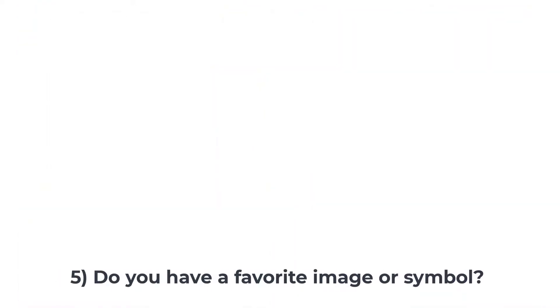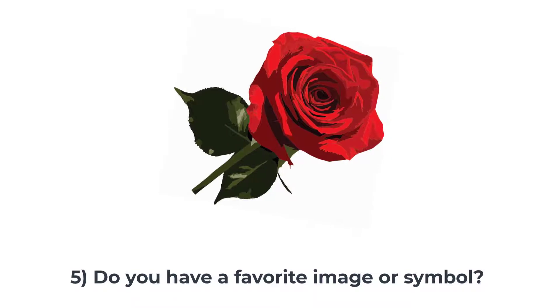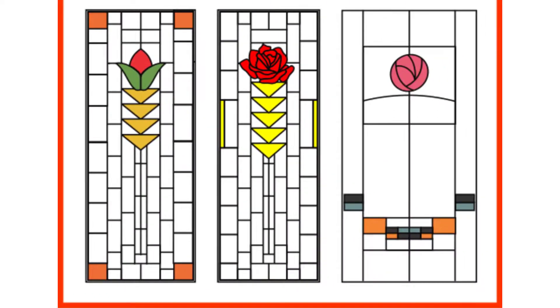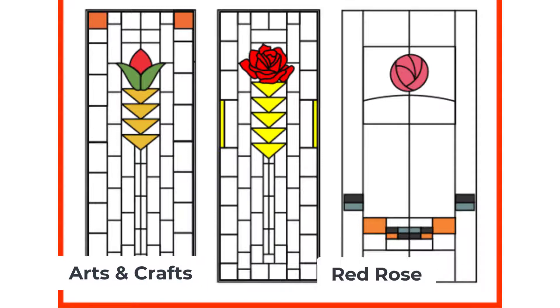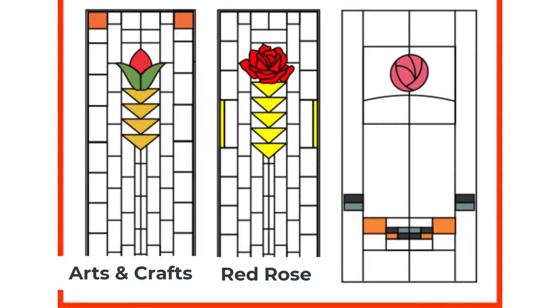The final design question is: do you have a favorite image or symbol that you would like to include to personalize your panel? Here we show three floral images introduced to add interest. On the left, a symbolic flower in the arts and crafts style. Followed by, in the center, a realistic rose, which can be made in your choice of color. And finally, on the right, the characteristic rose of the great Scottish Glaswegian architect Charles Rennie Mackintosh.